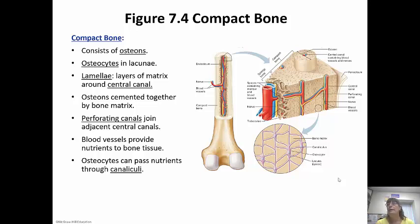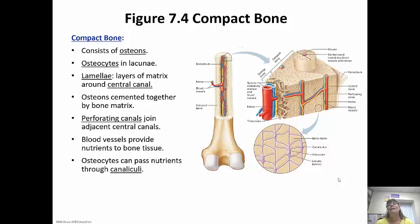If something perforates something, it's going through it — so perforating canals go through the sides of the bone, while central canals run up and down. Blood vessels provide nutrients to the bone tissue, and osteocytes can pass these nutrients to each other through the canaliculi. Osteocytes are basically the cells that help maintain the bone.